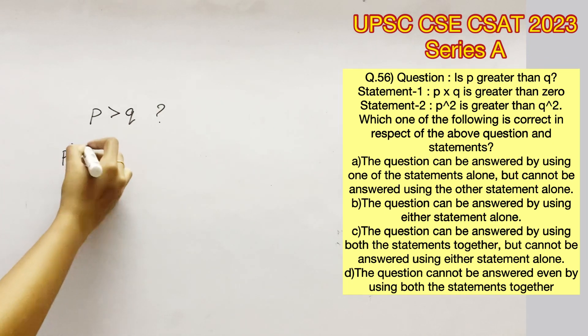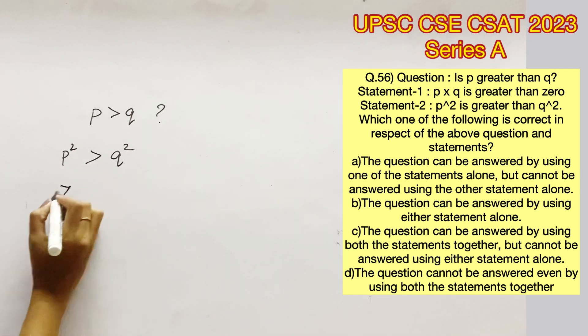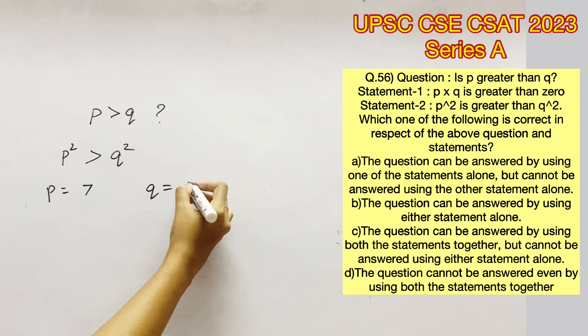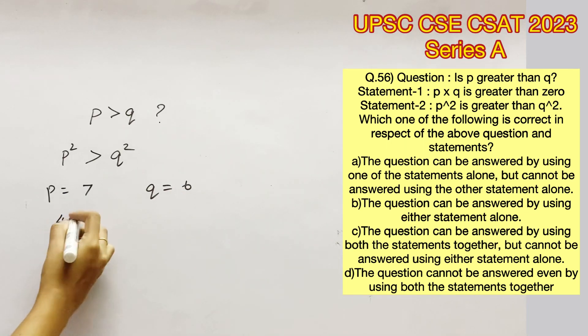Moving on to the next statement, P square is greater than Q square. For example, let's consider P as 7 and Q as 6. If we square these values, we get 49 and 36 and 49 is clearly greater than 36.